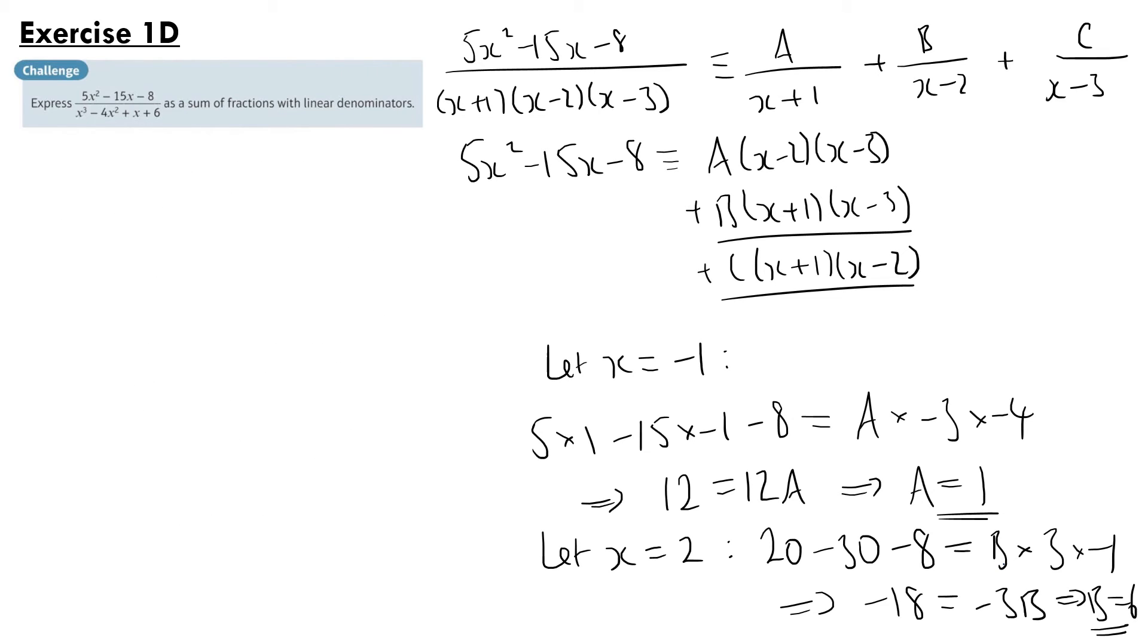Finally, letting x equal 3, we have on the left hand side 5 times 3 squared, so 45, minus 15 times 3, so that's minus 45, minus 8 is equal to c times 3 plus 1, which is 4, and 3 minus 2, which is 1. So we have minus 8 equals 4c, so c equals minus 2.